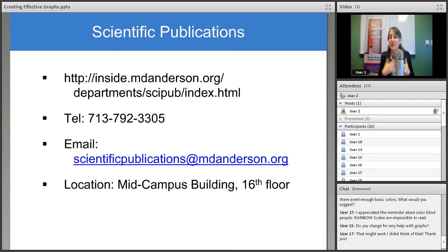No, our services are free. Editors are available to consult with you and we're always happy to answer questions. We're here to serve MD Anderson's faculty and staff. I appreciated the reminder about color blind people. Rainbow scales are impossible to read. Yeah. I'll mention while I'm waiting for any other questions, I'll just mention that our next webinar will be March 20th. Stephanie Deming is going to talk about strategies for selecting a journal and avoiding disreputable journals. So join us for that. And on our home page is links to our previous webinars. And in fact, we had one on creating effective tables that you can access there at that URL that you see there on this page.